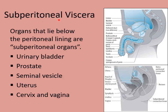Subperitoneal viscera: as the name indicates, organs that lie below the peritoneal lining are subperitoneal organs. In this diagram you can see the peritoneal lining, and below it lies the urinary bladder, uterus, cervix, and vagina — these are the subperitoneal organs.